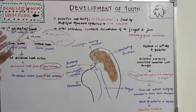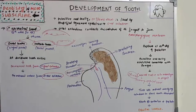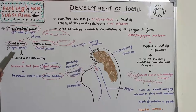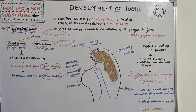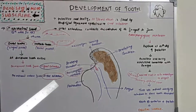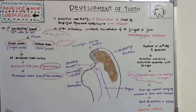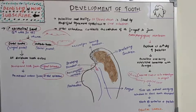After that, around the 7th week, the primary epithelial band divides into dental lamina (lingual process) and vestibular lamina (buccal process). The dental lamina gives rise to all deciduous teeth. Permanent teeth arise from the lingual extension of the dental lamina, while permanent molars arise from the distal extension of the dental lamina.